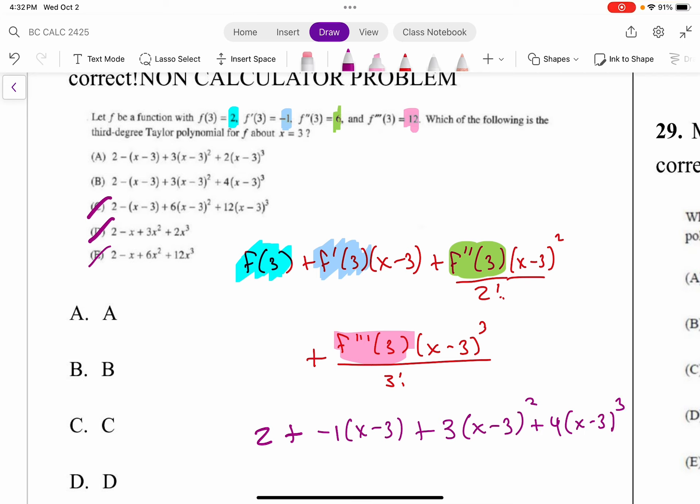And so we get our answer. All right, f double prime... sorry, I just did that wrong. 12 divided by 3 factorial is not 4, 12 divided by 3 factorial is 12 divided by 6 which is 2. Sorry about that, that wasn't right. Okay, so the answer choice is A.